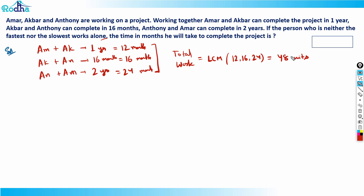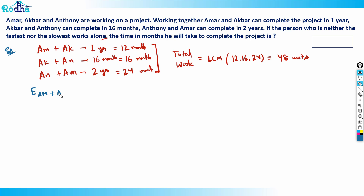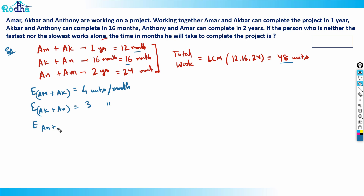So the efficiency of Amar plus Akbar: total work is 48 units and they complete it in 12 months, so that is 4 units per month. Similarly, efficiency of Akbar plus Anthony is 48/16 = 3 units per month, and efficiency of Anthony plus Amar is 48/24 = 2 units per month.